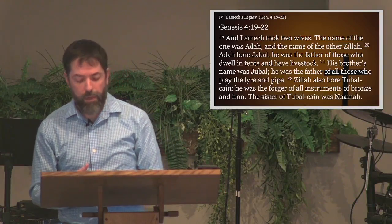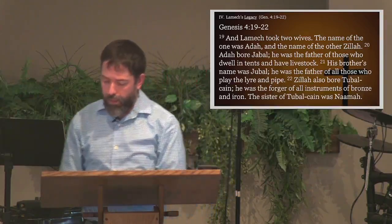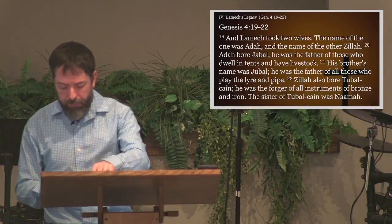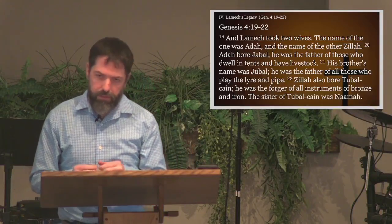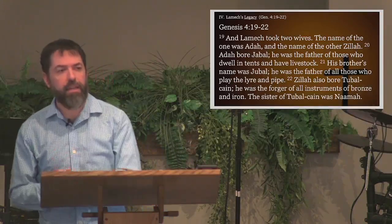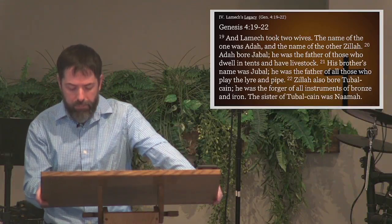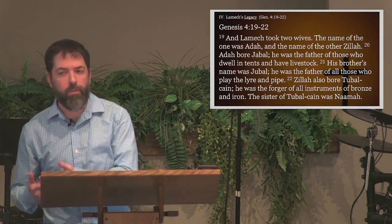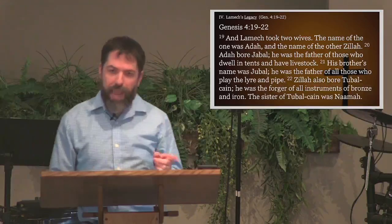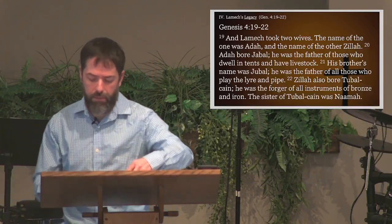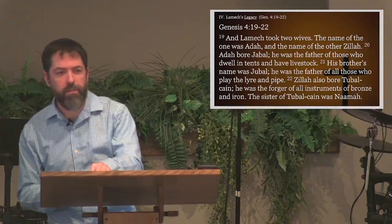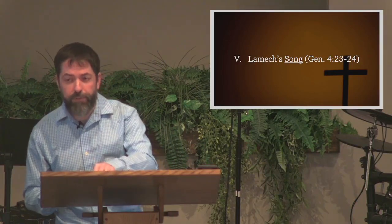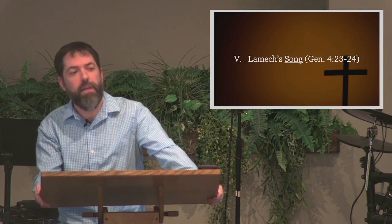Zillah had a second child, a daughter named Na'amah. Her name means lovely. Notice how she is referred to as Tubal-Cain's sister rather than Zillah's daughter. She's named, unlike Cain's wife or any of the wives of the other men in the genealogy besides Lamech. One wonders if she's only named to bring a certain symmetry or completion to the genealogy. Not counting Lamech's wives, between Cain and Na'amah, we have ten names listed. Lamech's true legacy, however, is reflected in his song. His descendants and their cultural developments are significant, but they take a back seat here to the poetry of Lamech and what it reflects about his character and the nature of humanity at this point in history.